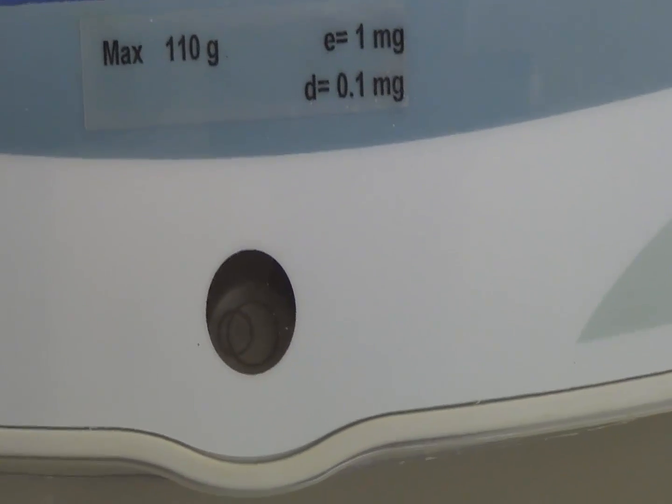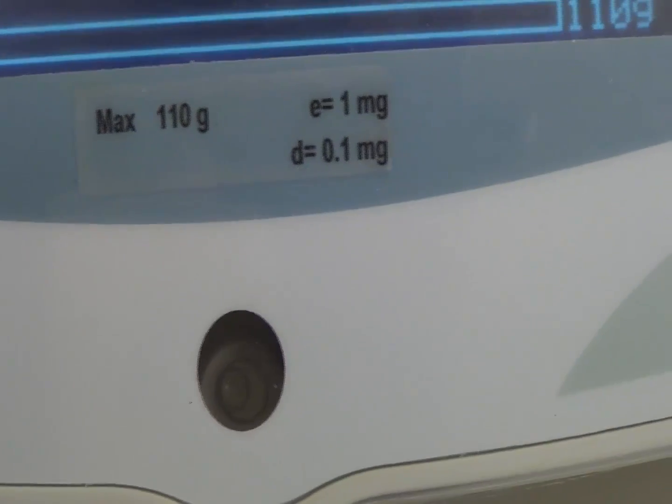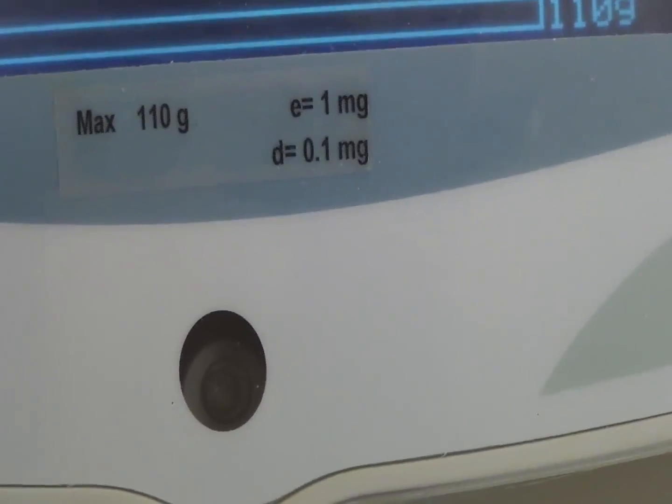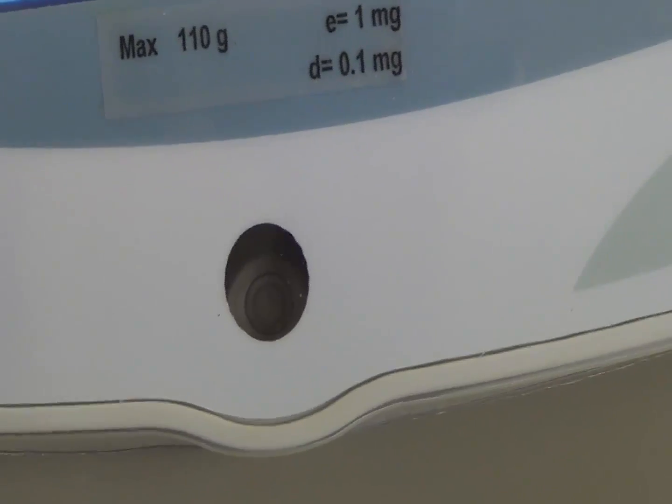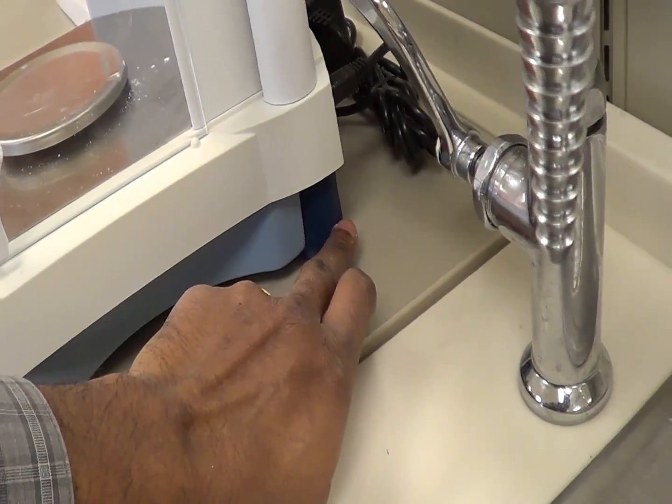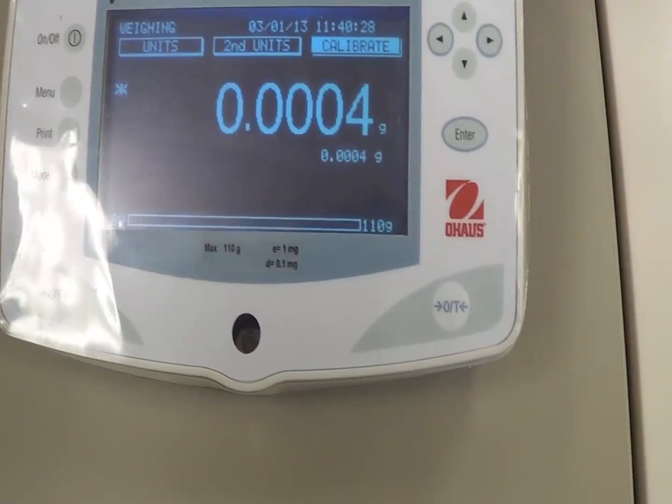So when you want to use the weighing balance, make sure you adjust the base properly by rotating these wheels, either clockwise or anticlockwise. Make sure that the bubble should be in the middle. There are two places you have to adjust: one on this rear end and the other one on the left rear end. Then you are going to use it.